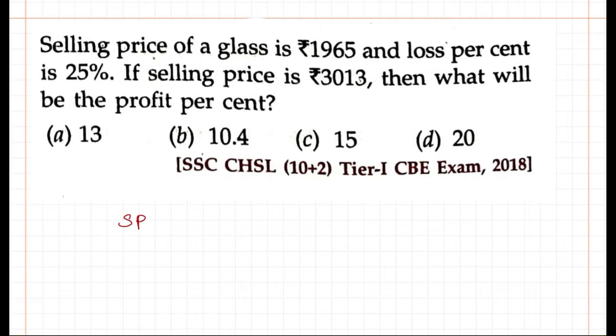So from the first sentence, selling price SP equals Rs.1965 and loss percentage. The loss percentage can be found by the formula: cost price minus selling price divided by cost price times 100 equals 25%.